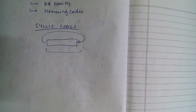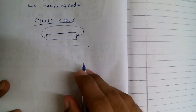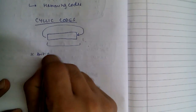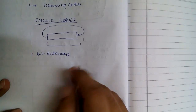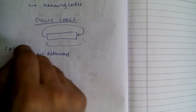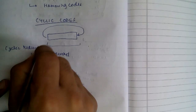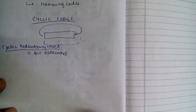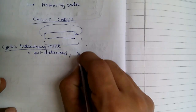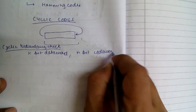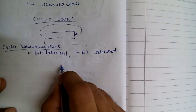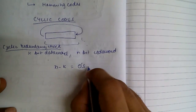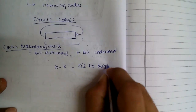So let's do an example. We have a k-bit data word, and we are performing Cyclic Redundancy Check (CRC) — this is the method used on cyclic codes to detect errors. We have a k-bit data word and an n-bit code word, and we are going to append n minus k zeros to the right of our data word.